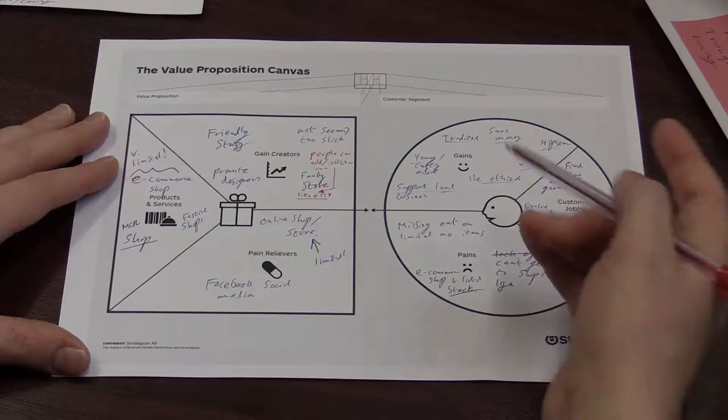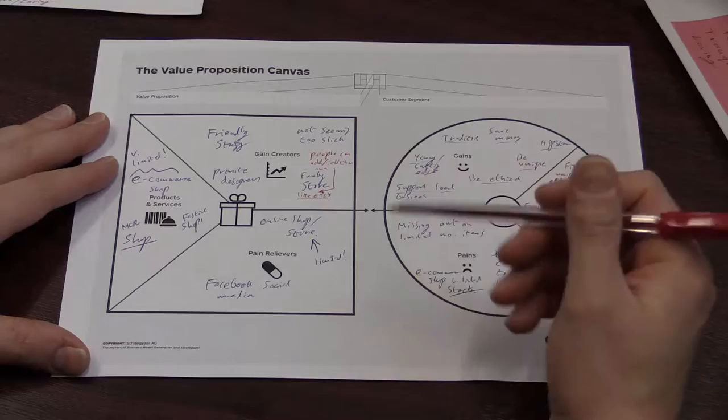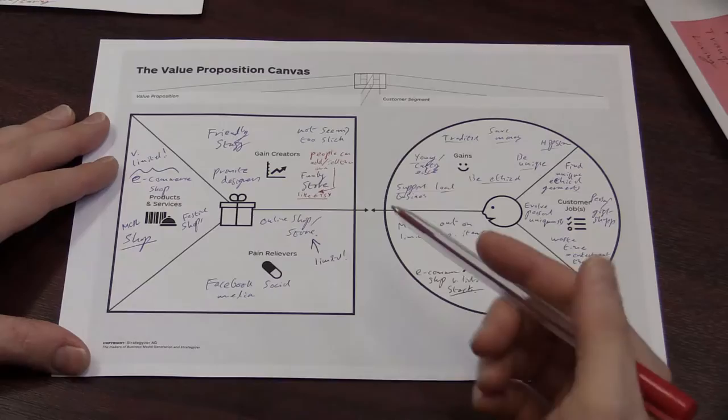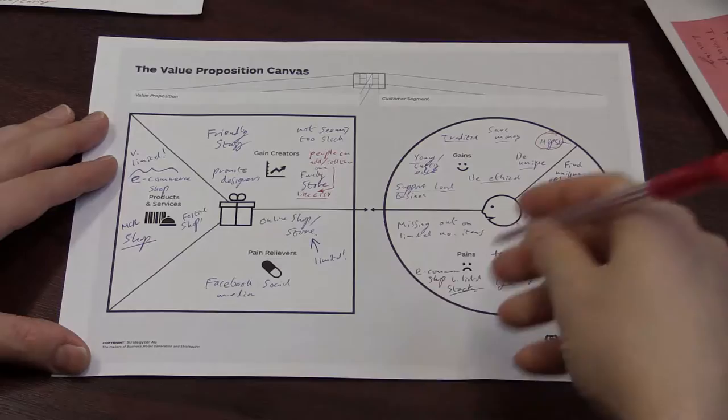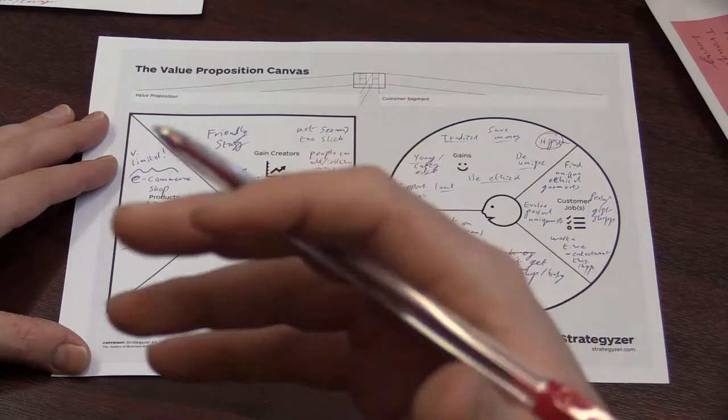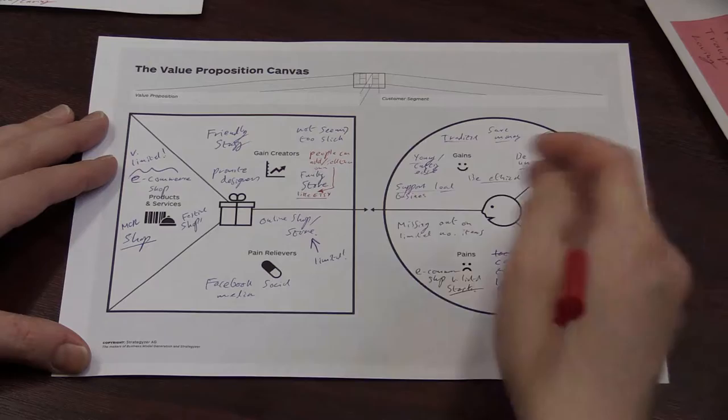So the gains from the customers from shopping here is that it's a very young, cutting-edge brand, very traditional. People can save money because it's not expensive. It's a local business. They like supporting it. They like being ethical. They like being unique. And then there's the whole tribal behavior of, you know, I'm a hipster and I like wearing hipster-like clothing. The jobs people are trying to do is finding unique ethical garments, evolve their personal uniqueness. We find something that isn't just saying how we are currently, but going a bit further. Maybe you waste time. So entertainment through shopping and browsing, which we all like to do. Then looking for gifts for yourself or for someone else.